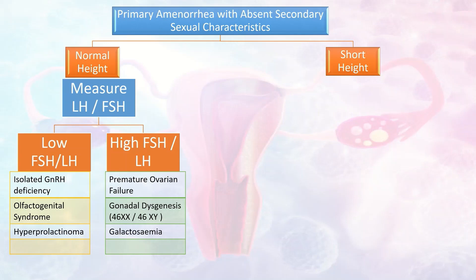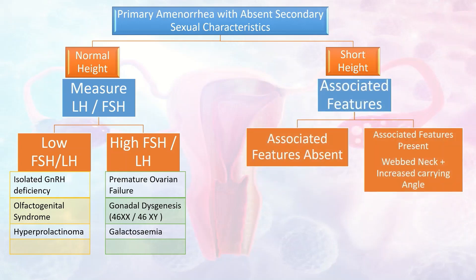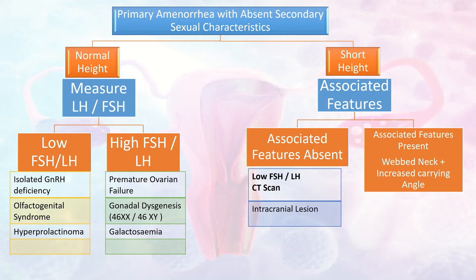In the short height group, we look for associated features. When associated features such as webbed neck and increased carrying angle are absent, FSH and LH levels are usually low, and CT scan is advised to diagnose intracranial lesions. When these associated features are present, karyotyping is done to diagnose conditions like 45XO, 45XO/46XX, and 45XO/46XY.